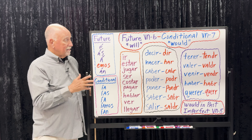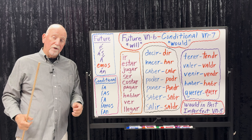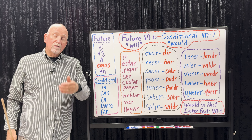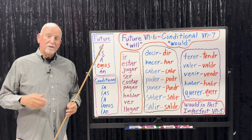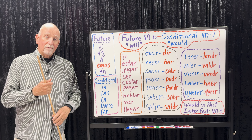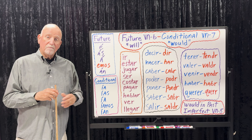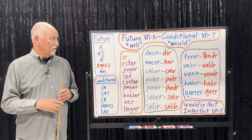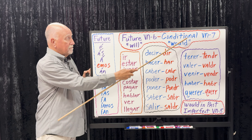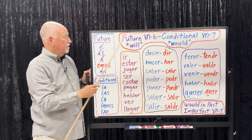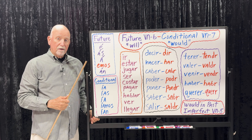So that is the future and the conditional. The future is will; the conditional is would — referring to what you would do now, tomorrow, next week, or in the future. Would in the past — like 'I would always drink milk,' siempre tomaba leche — is imperfect, verb number five. The verb number for the future is six; the conditional is seven. The endings for the future are the same for all verbs: AR, ER, and IR.